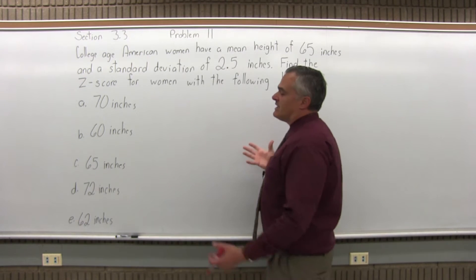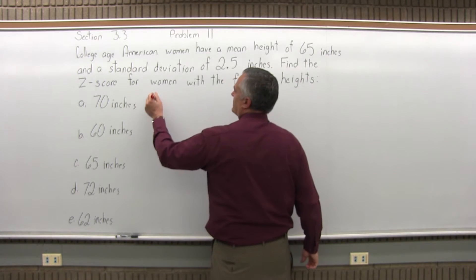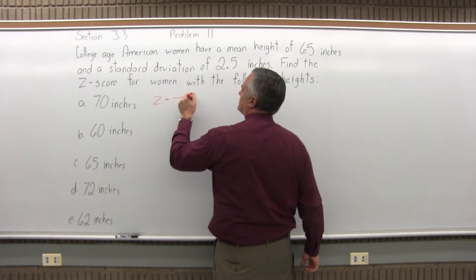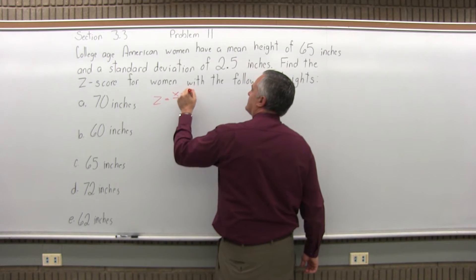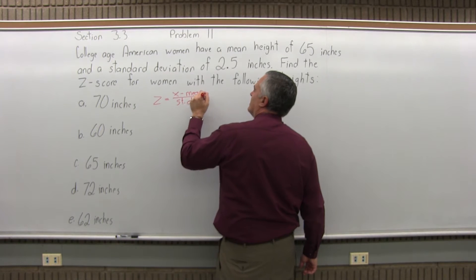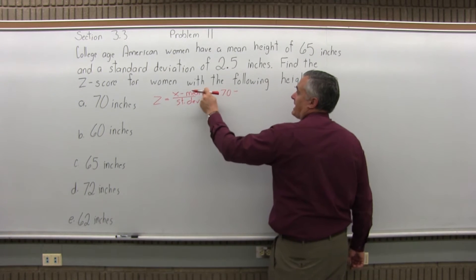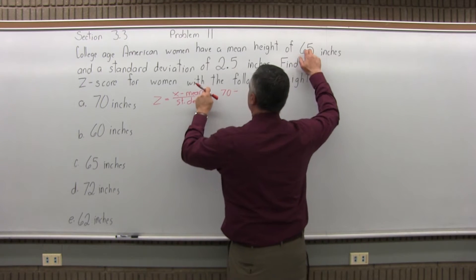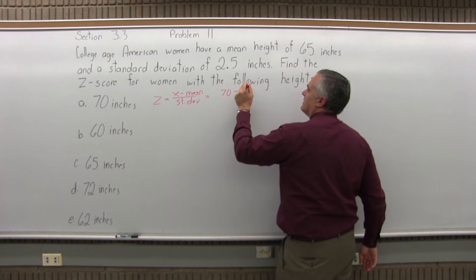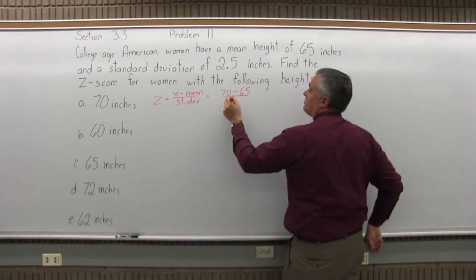That's 5'10", just so you can get an idea of what you're looking at. So z equals x minus the mean over the standard deviation. So for 70 inches, x is the 70, minus the mean is given at 65, over the standard deviation which is given at 2.5.